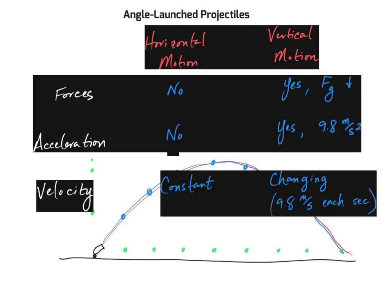This video lecture was meant to help you visualize the two types of projectile motion — understanding what's happening with velocity and acceleration, and how that affects the path of a horizontally or angle-launched projectile. Next week we'll delve deeper, beginning with horizontally launched projectiles and then moving on to the more advanced angle-launched projectiles. Have a great weekend, AP Physics students — take care.